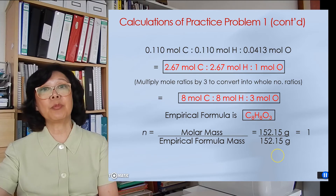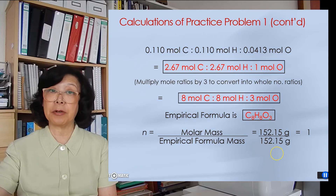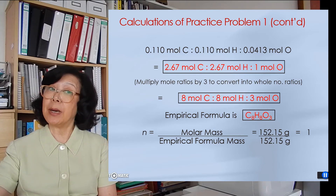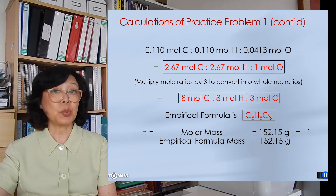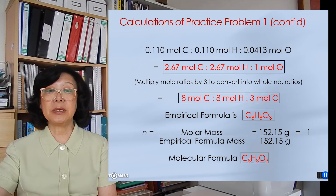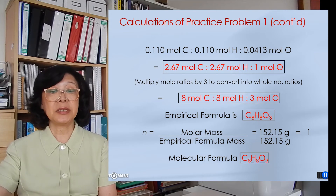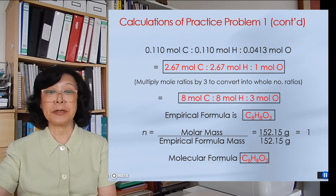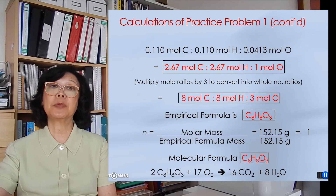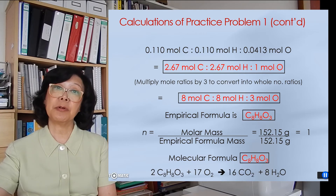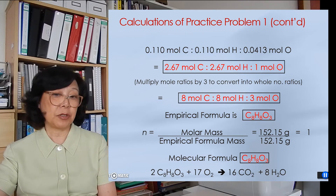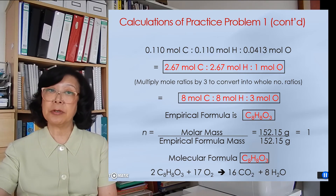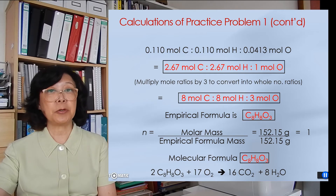Now we compare the molar mass to the empirical mass — both are 152.15 grams, so the ratio is 1. That means the empirical formula is the same as the molecular formula. We can use that to write the balanced equation: 2 moles of vanillin combined with 17 moles of oxygen yield 16 moles of carbon dioxide and 8 moles of water.